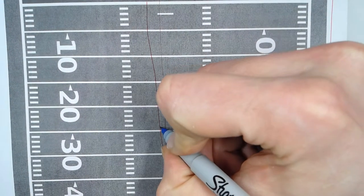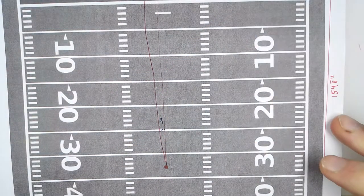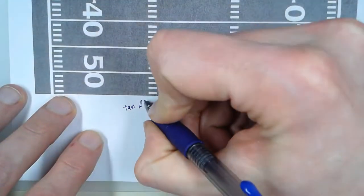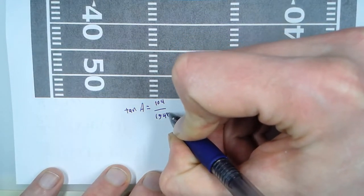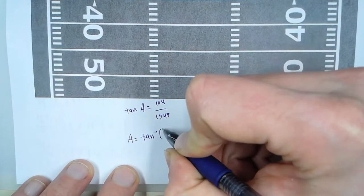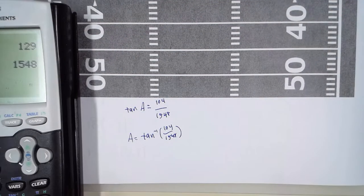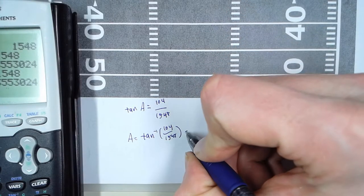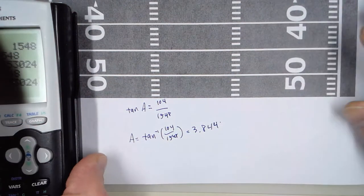So if we call this angle right here, call that angle A. So in this right triangle, we have tangent of angle A equals 104 over 1548. So A is the inverse tangent of that. 104 and 104, 1548, and that's going to be an angle of 3.844 degrees. Alright.